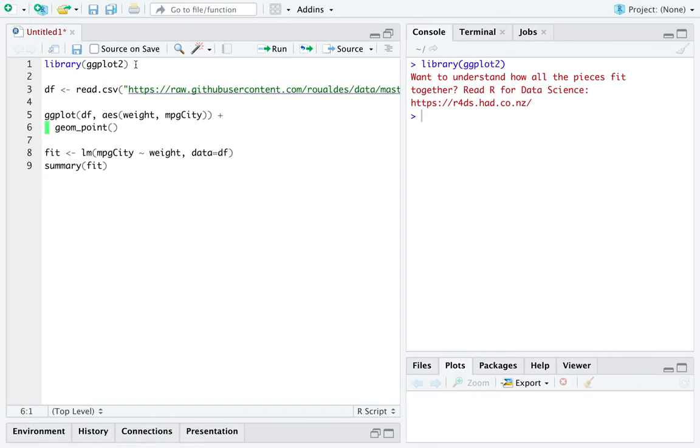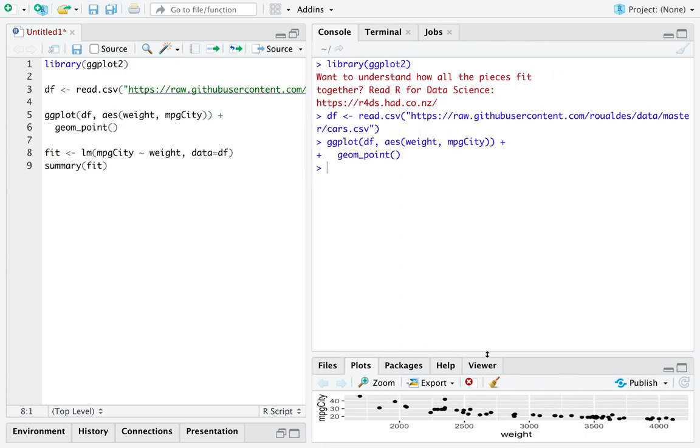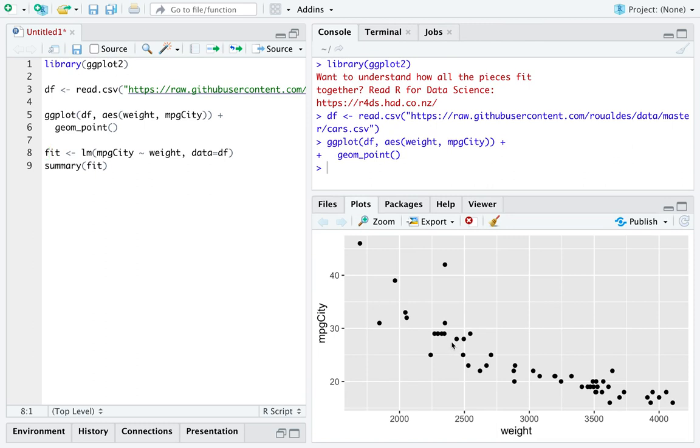So I've already loaded the library ggplot2. I've already got some code up here to read in the dataset cars from my GitHub repository. The repository is under my last name and named data. I'm going to say we are currently interested in trying to predict city miles per gallon using the weight of a car.